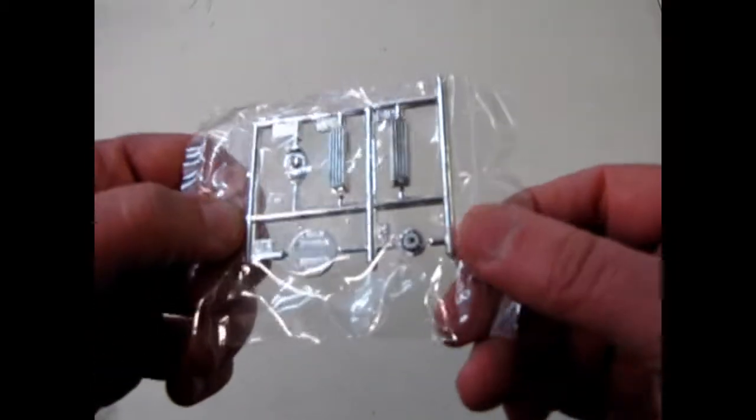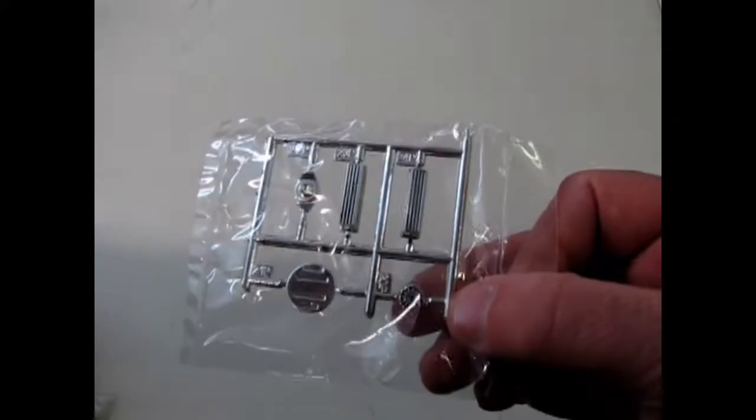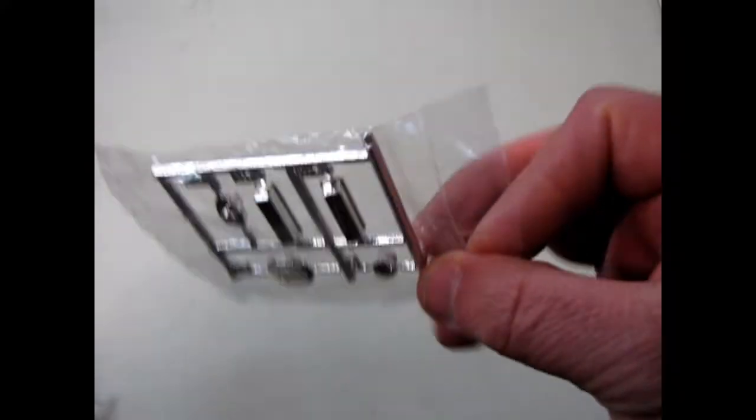There's valve covers and air cleaner including an alternator. And they've already been stained somewhat so you can pick out the detail.